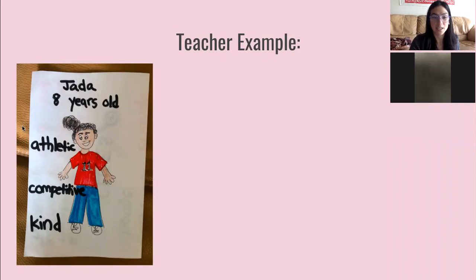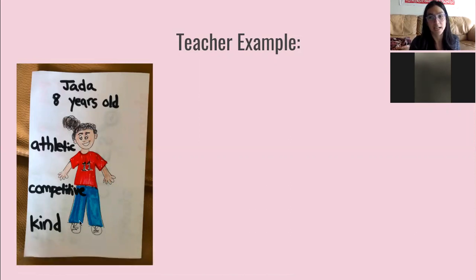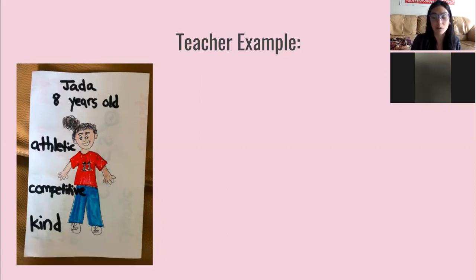So this is Miss Sarah's example. We know that Miss Sarah has made up the character Jada. She's eight years old, she's athletic, she plays soccer, she's kind, and she's a good friend. That's the character that Miss Sarah made up. And we've already listened to a story about her not being able to find her cleats for her very important soccer game. That's already one adventure that she's gotten into.